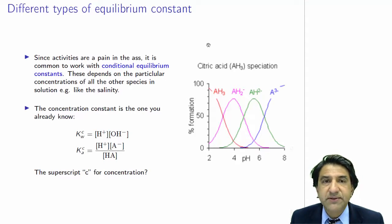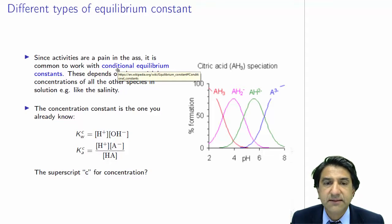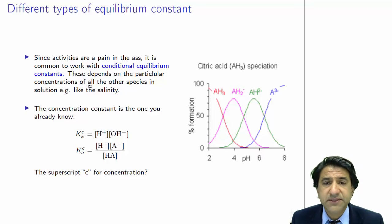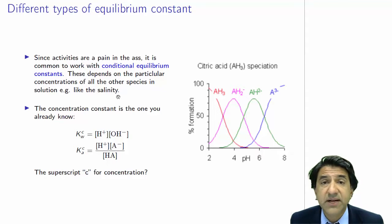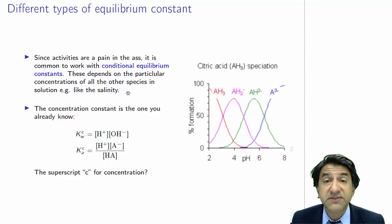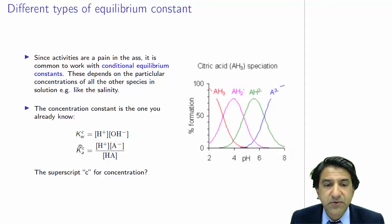Before we take countermeasures, let's look at different types of equilibrium constants. Activities are a pain, so it's common to work with something called the conditional equilibrium constants. These depend on particular concentrations of all the other species in solution — for example, like salinity. We can measure the equilibrium constant at different salinities; those would be conditional equilibrium constants, conditional on the concentration of other things being fixed. We give that the symbol Kc with a superscript for conditional.